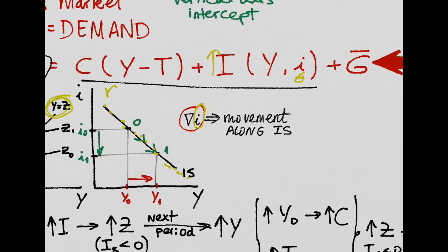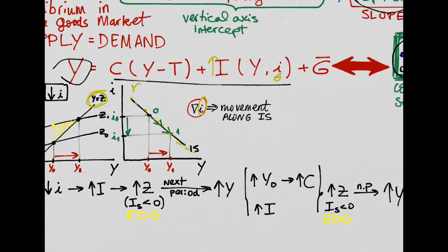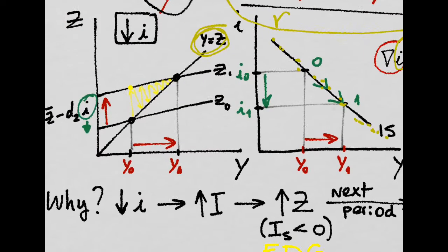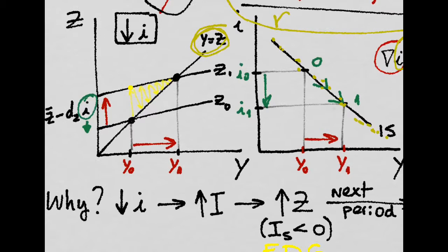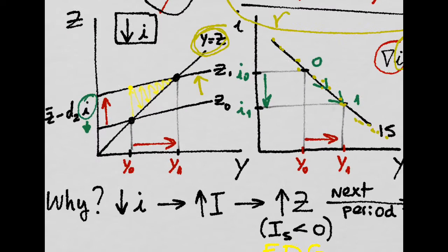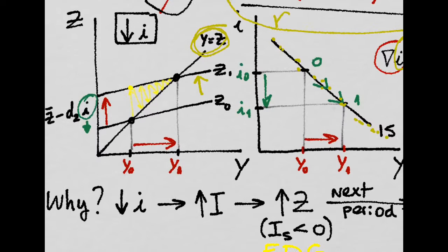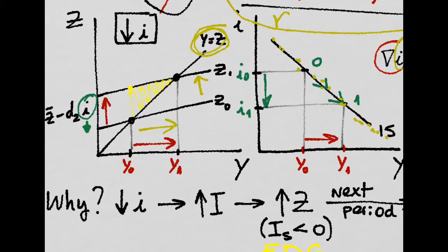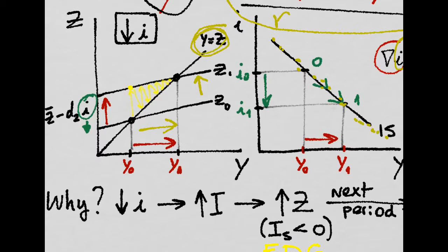But when you increase investment, demand, your aggregate demand, also goes up because investment is a component of aggregate demand. So this provokes a shift upwards of our aggregate demand line. An equilibrium with supply will be reached at a higher output. But let's see the process step by step.